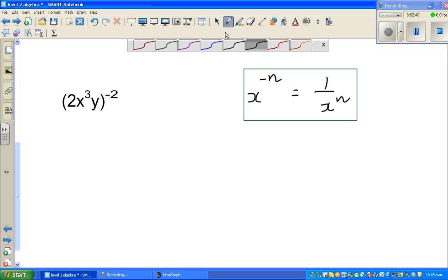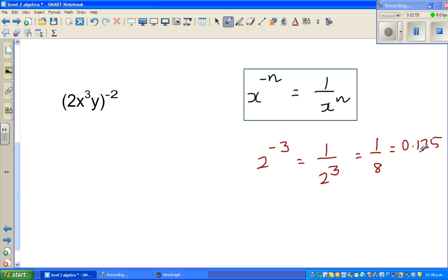We can show suppose 2 to the power minus 3 is nothing but 1 over 2 cube which is 1 over 8. 1 over 8 is 0.125. Let me show 1 over 8. It's half of a quarter. A quarter is 0.25 so 1 8th is 0.125. So let me show this on the calculator.